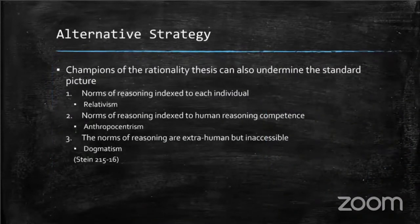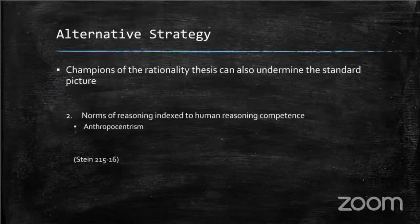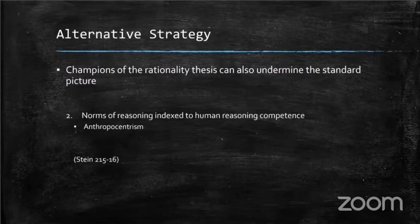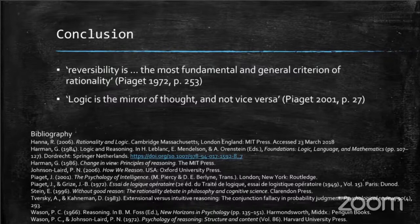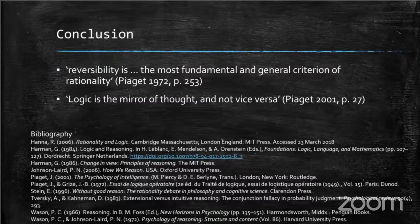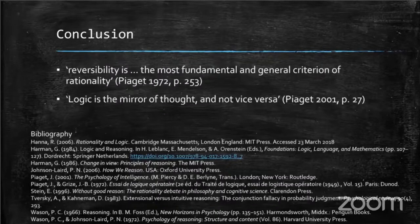Returning to the alternative strategies: Piaget's position corresponds to the second strategy — undermining the irrationality thesis by denying that normative principles of reasoning can diverge from human reasoning competence. In other words, the norms of reasoning are not independent of reasoning competence. According to Piaget, rationality resides in the reversibility of human reasoning competence. The consequences are that Piaget must explain away psychological experimental findings as performance errors, and that reasoning and rationality are anthropocentric.